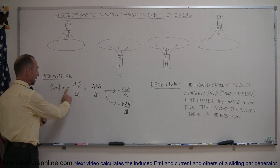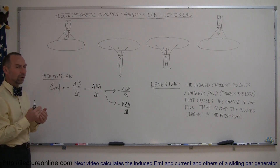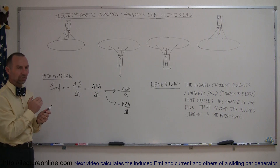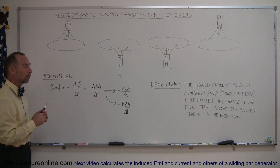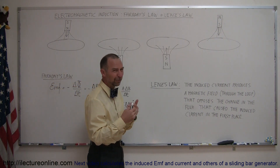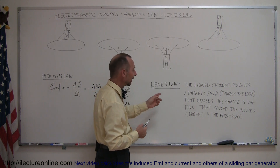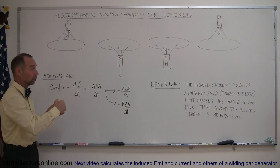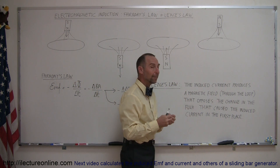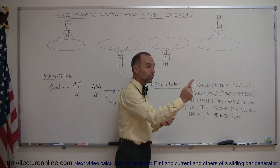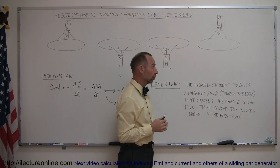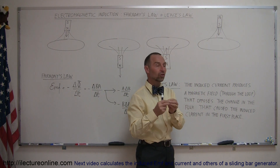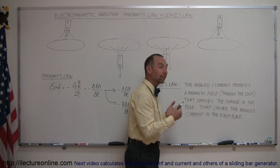Now, you may have wondered why that negative sign is in that equation. The negative sign is there to help us understand Lenz's Law. What we didn't learn yet is what is the direction of that current in the loop when an EMF is induced. Lenz's Law helps us understand that. Lenz's Law states that the induced current, which is caused by the induced EMF, produces a magnetic field of its own — because any time you have a current going around a loop there will be a magnetic field through the loop — and that magnetic field opposes the change in the flux that caused the induced current in the first place.